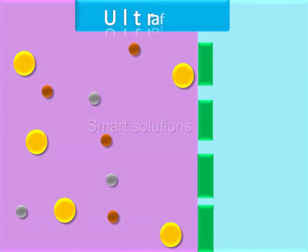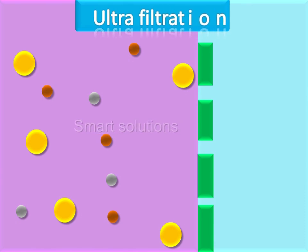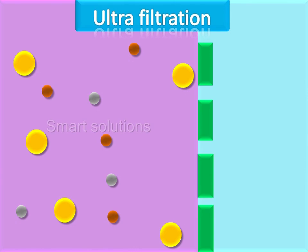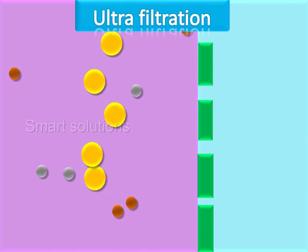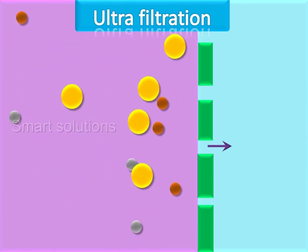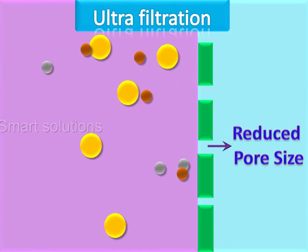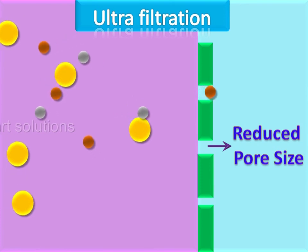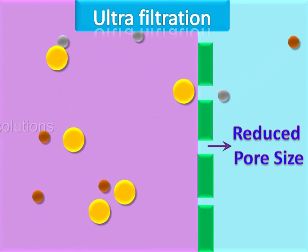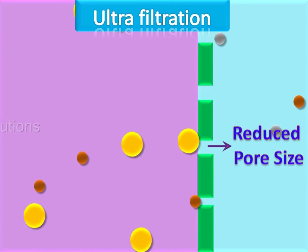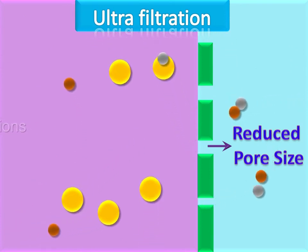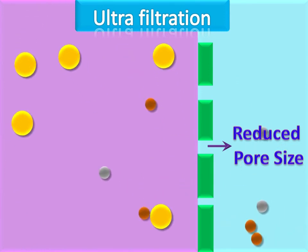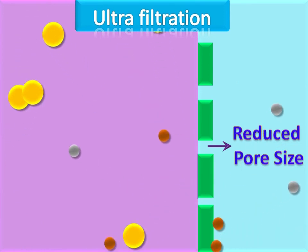Ultrafiltration. In this method, special filters are used to obtain the pure colloidal solution. The size of the pores is reduced in this filter paper to avoid the diffusion of colloidal particles from the solution. Due to the small size of pores, ultrafiltration is a slow process.